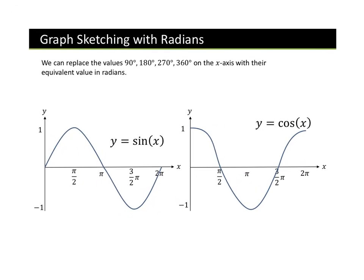When we are drawing our sine, cos, and tan graphs, instead of writing them in terms of degrees, we're going to write them in terms of π. So instead of 90 degrees it's π over 2, instead of 180 it's π, instead of 360 it's 2π. So all we're changing is the x-axis — we're not changing the y-axis.